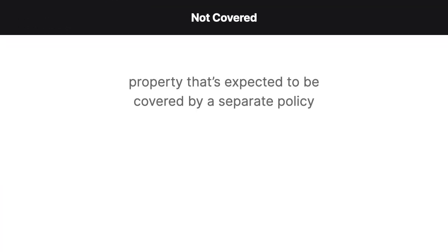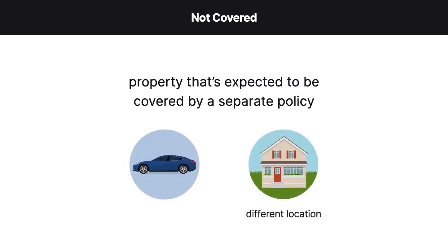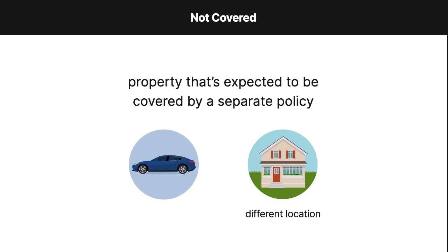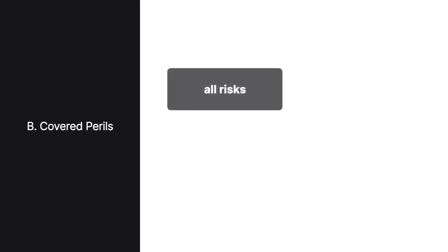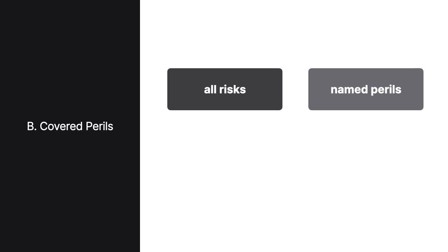However, homeowners' policies generally don't cover property that's expected to be covered by a separate policy, such as automobiles or a second dwelling at a different location. Homeowner's policies may be structured as either All-Risks or Named Perils policies.